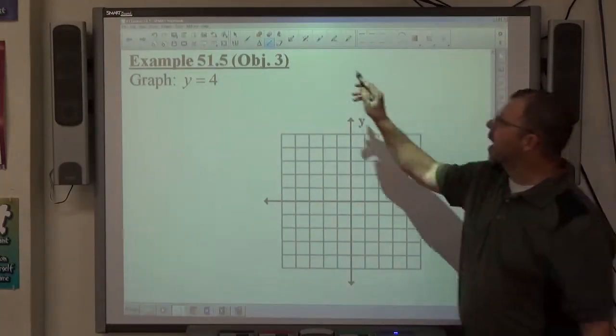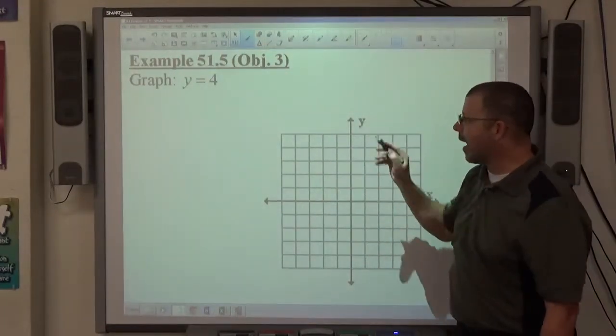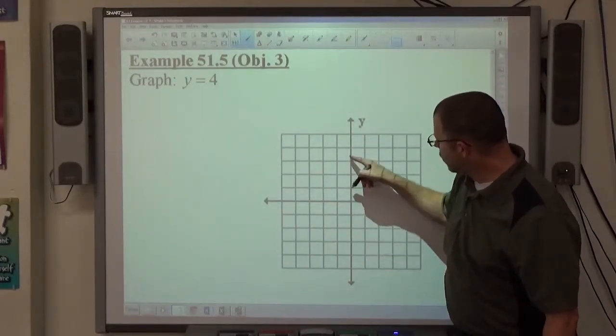If y equals a number, y has to be 4. So y equals 4, y has to be 4. One, two, three, four. There's 0, 4. There's 1, 4.